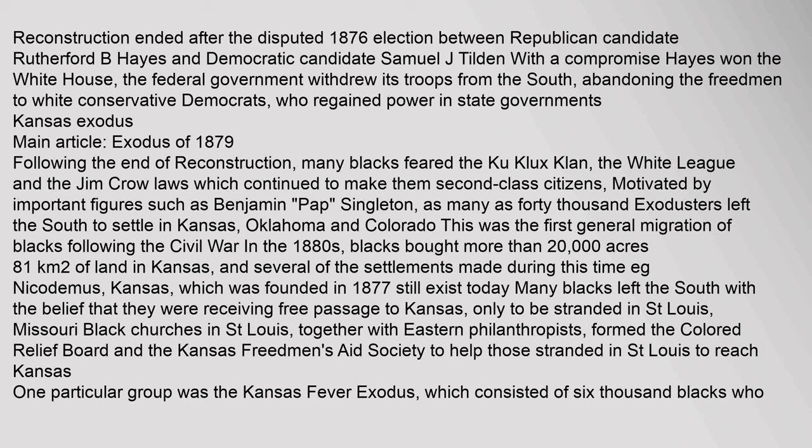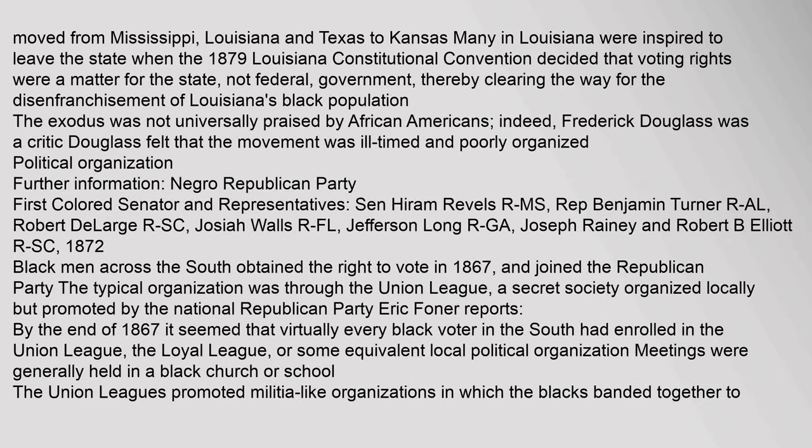In the 1880s, blacks bought more than 20,000 acres, moving from Mississippi, Louisiana and Texas to Kansas. Many in Louisiana were inspired to leave the state when the 1879 Louisiana Constitutional Convention decided that voting rights were a matter for the state, not federal, government, thereby clearing the way for the disenfranchisement of Louisiana's black population. The Exodus was not universally praised by African Americans; Frederick Douglass was a critic who felt the movement was ill-timed and poorly organized.